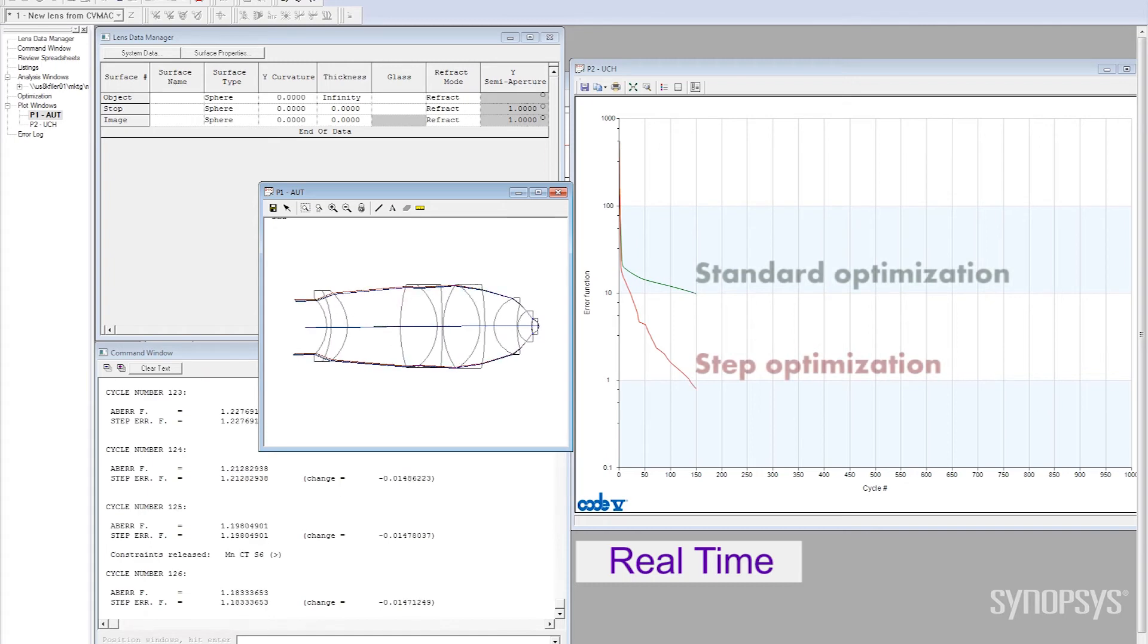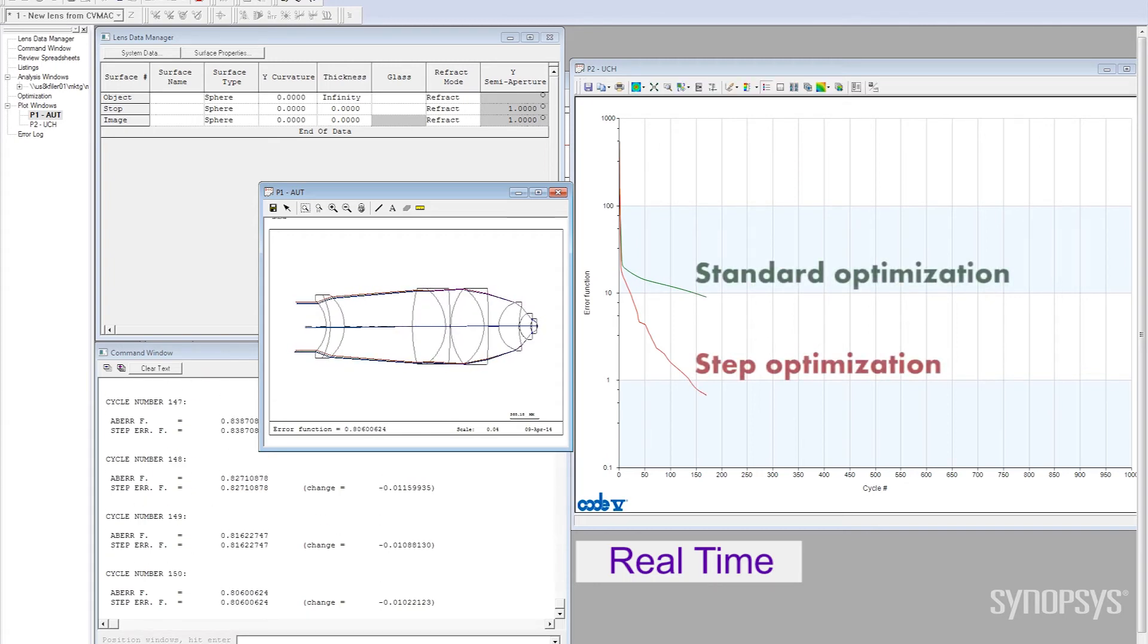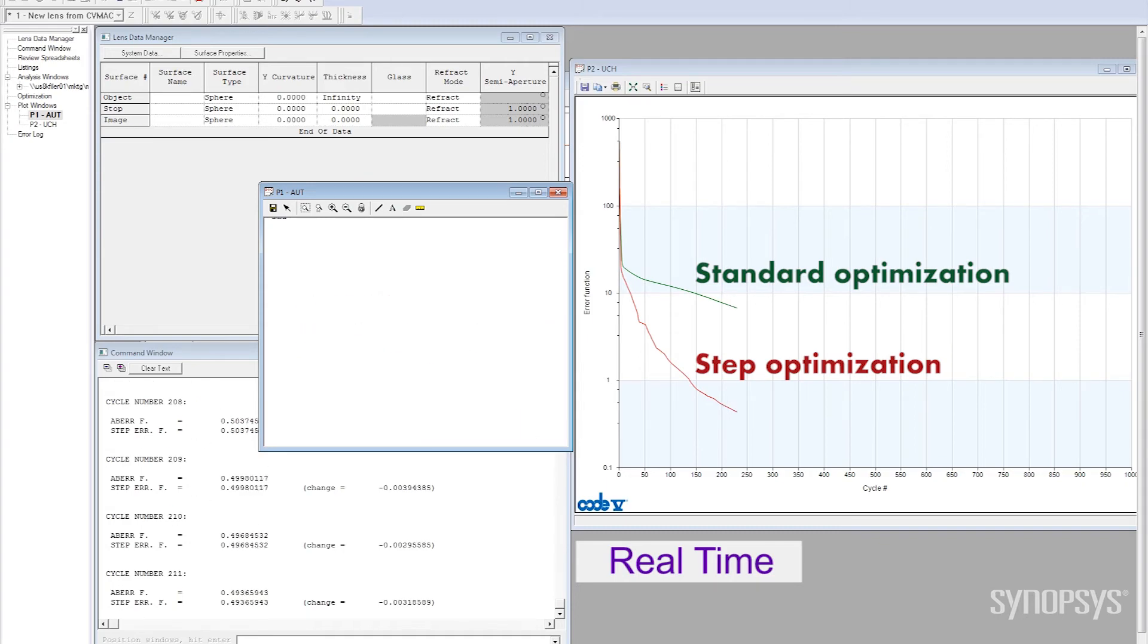Step optimization is a way to accelerate that and allow customers to do things much faster. And so the combination of the global synthesis optimizer for searching global space and the step optimization algorithm for speeding up that capability in the local optimization phase really helps our customers find their solutions much more quickly than they could before.